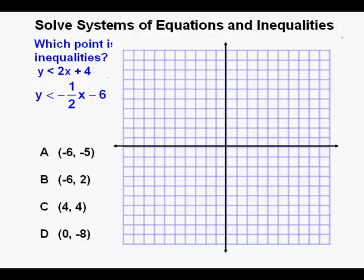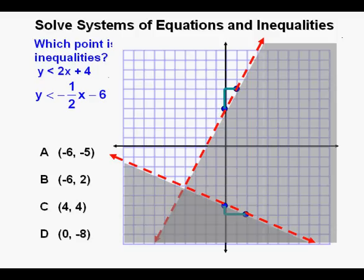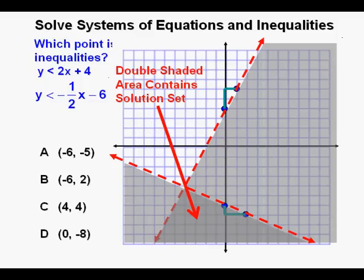We bring out the coordinate plane to graph just as we did in the earlier problem. The first inequality is graphed using a rise of 2 and a run of 1, but because of the less than symbol we have a dashed boundary line. This less than sign means that the solutions are found below this boundary line, which we mark by shading below the dashed line. For the second inequality we also use a rise of negative 1 and a run of 2, then draw the boundary line dashed again because the inequality symbol is less than, and we shade below that dashed line as well. So it is this section below both boundary lines that contains the solution set.